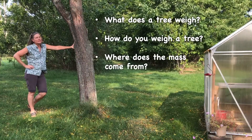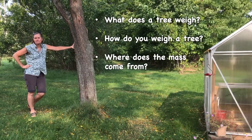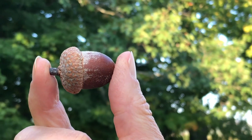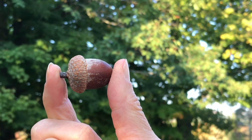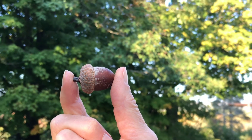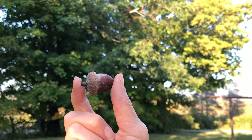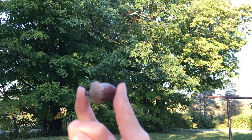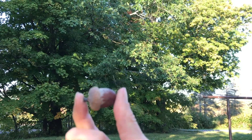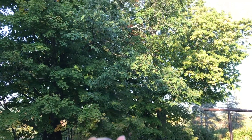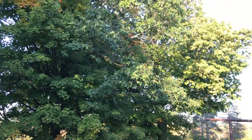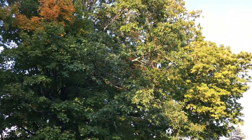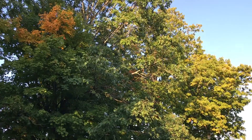Let's answer question number three first. Trees are made out of thin air, meaning their mass comes from molecules in the atmosphere — carbon dioxide gas and rainfall. Photosynthesis builds the biomass of plants, allowing tiny acorns to grow into enormous oak trees.